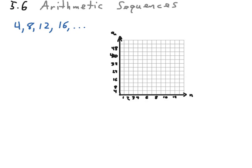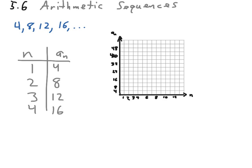We have here the arithmetic sequence 4, 8, 12, 16, and so on, and we need to build a graph out of this. So, let's start by associating the number of the term, n, with the term itself, a sub n, and arrange this into a table. So, our first term is 4, our second term is 8, third term is 12, fourth term is 16, and we continue from there.